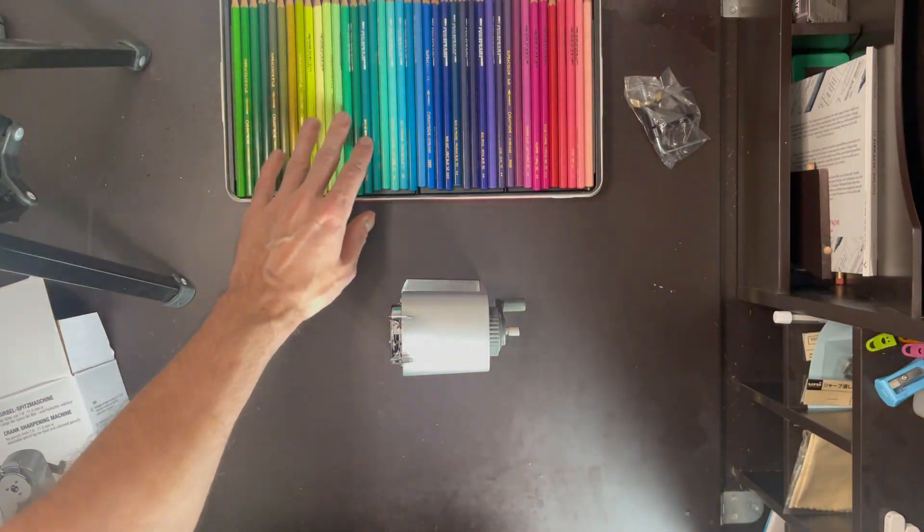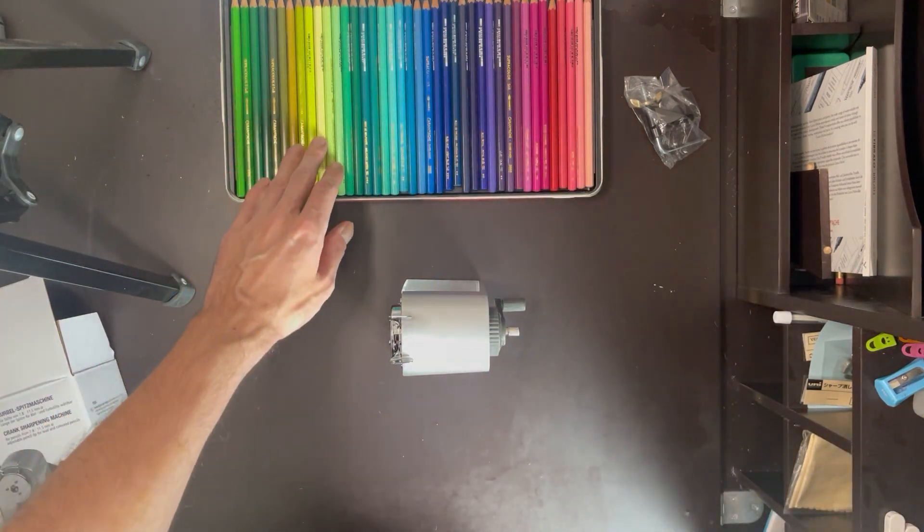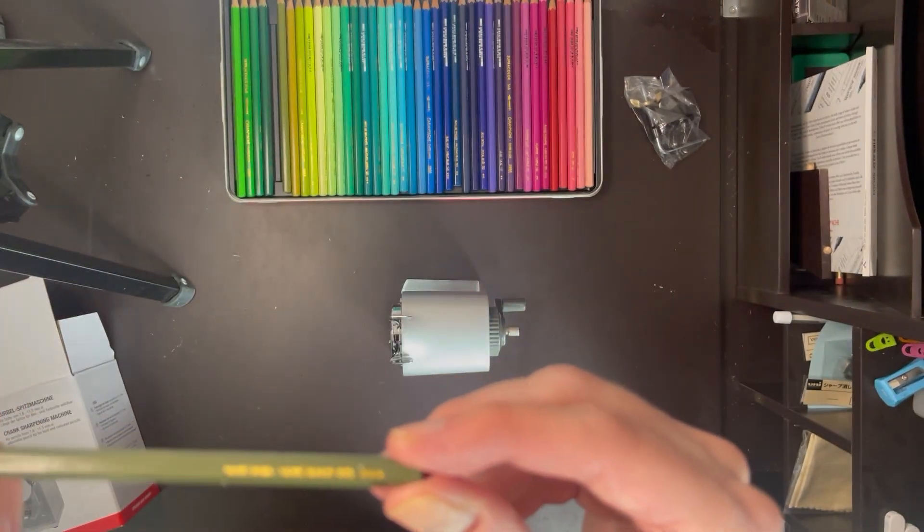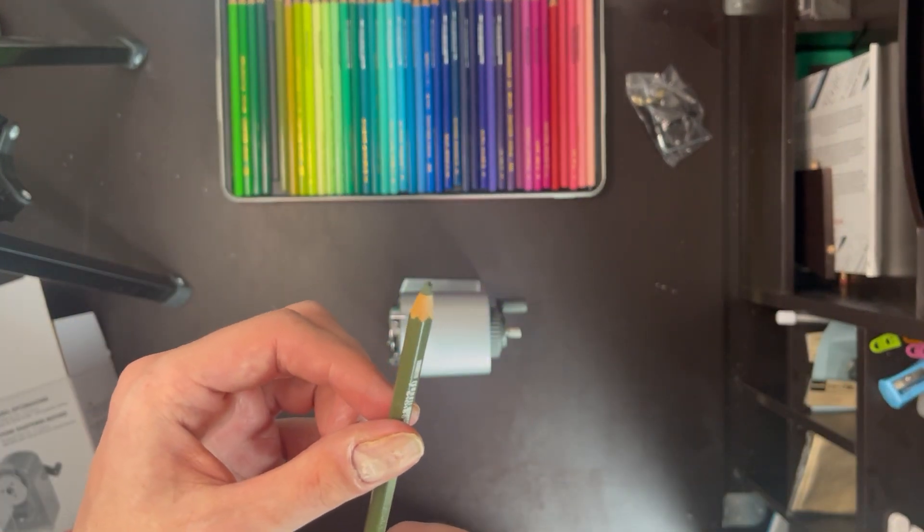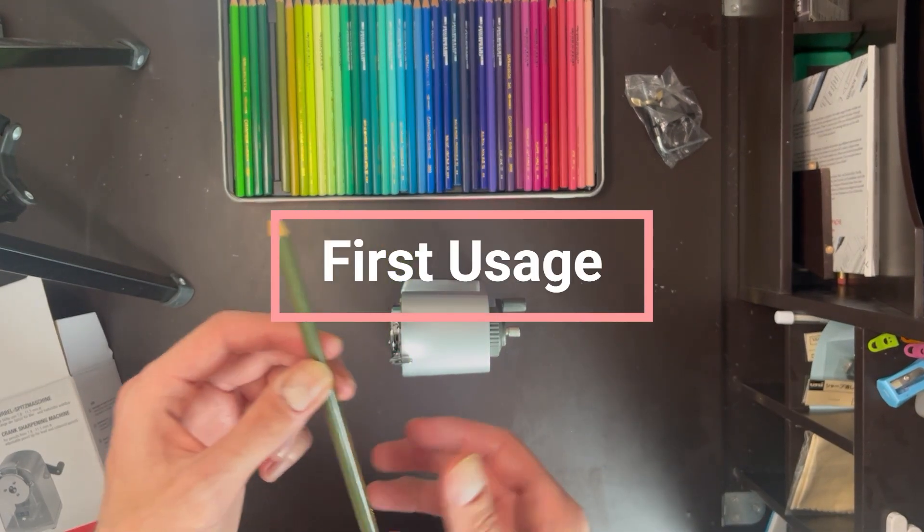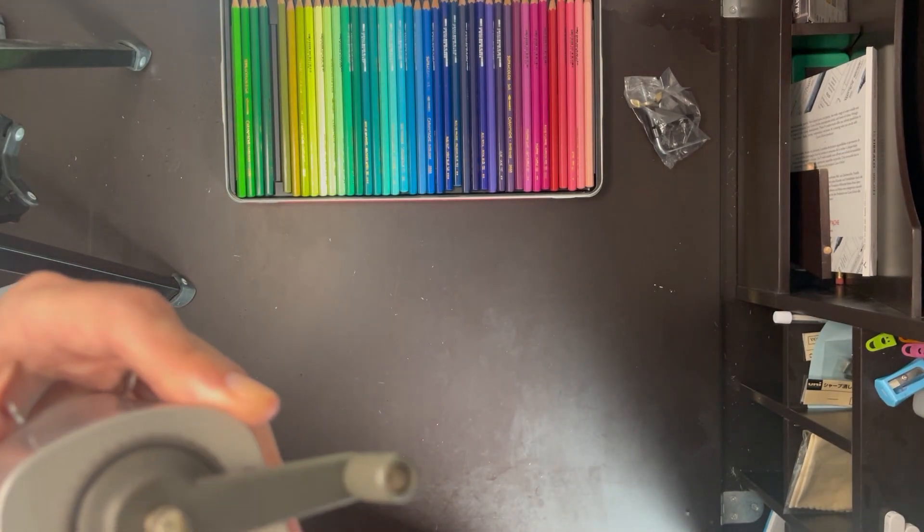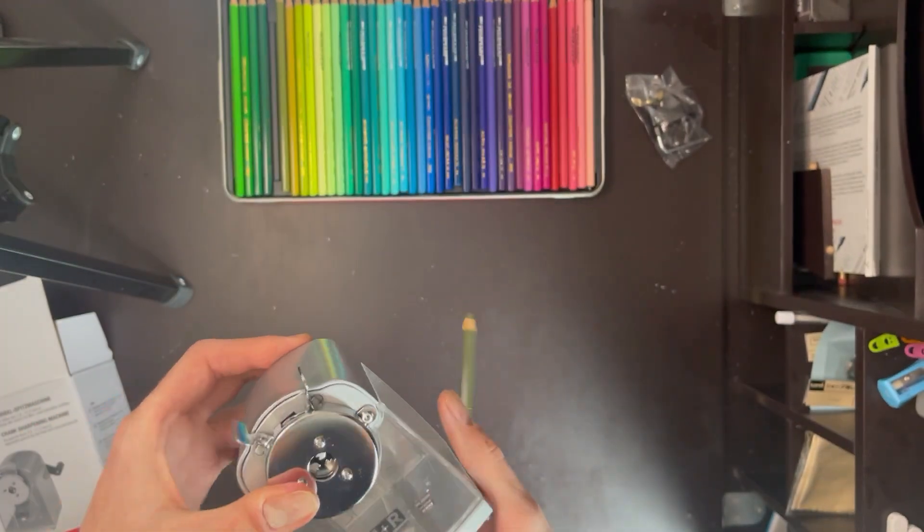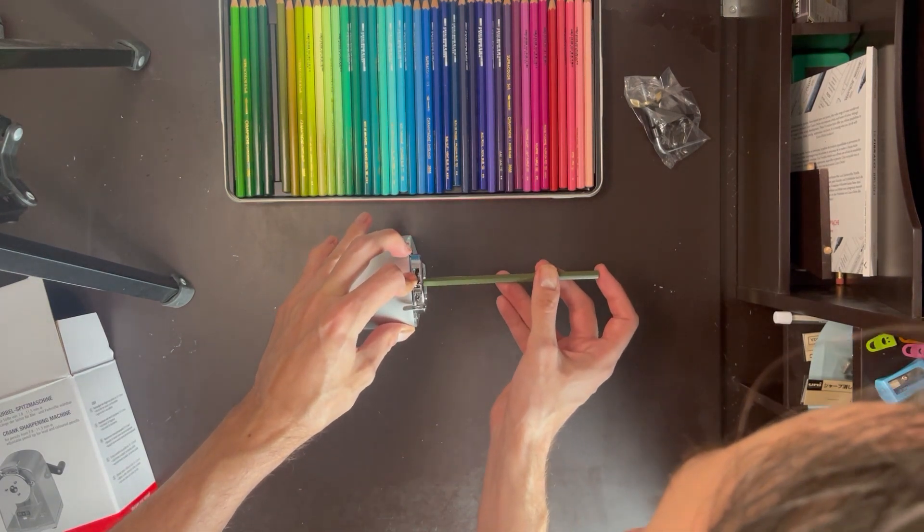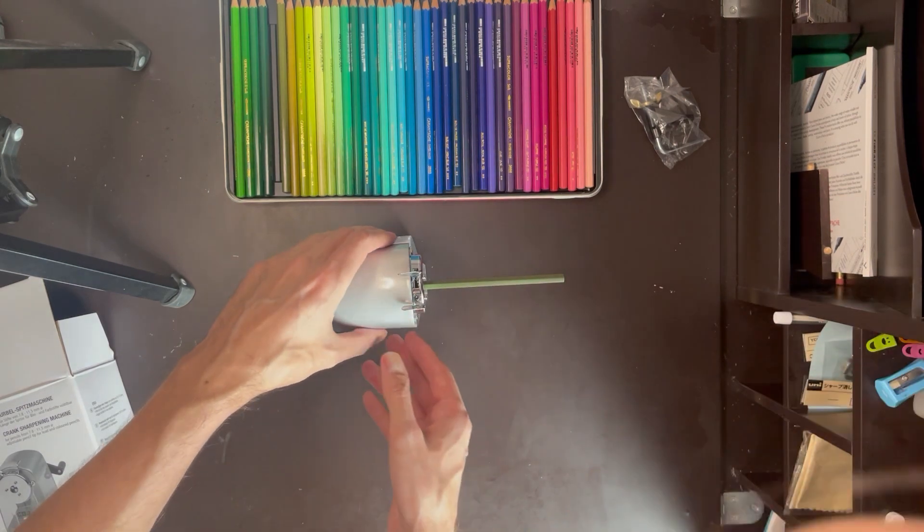So let's have a look. Let's go with something that I've used quite a bit. Let's use this one, which is olive black. That's what it is at the moment. It's not sharp. It's pretty blunt. So we're going to give this a go. I've put the setting to sharpen. I'm going to put the pencil in. Okay, so that's in now.